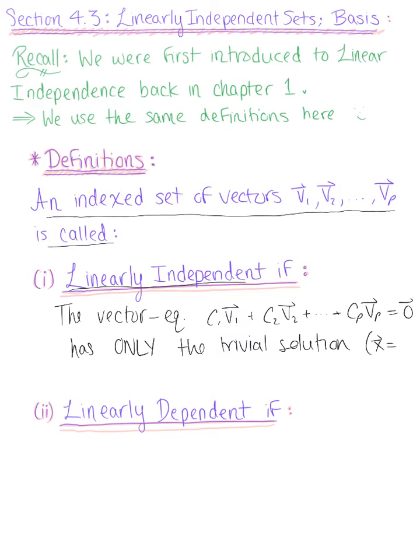Meaning that vector x is only the zero vector. So in other words, this means that all of our weights, c sub 1, c sub 2, are all zero.